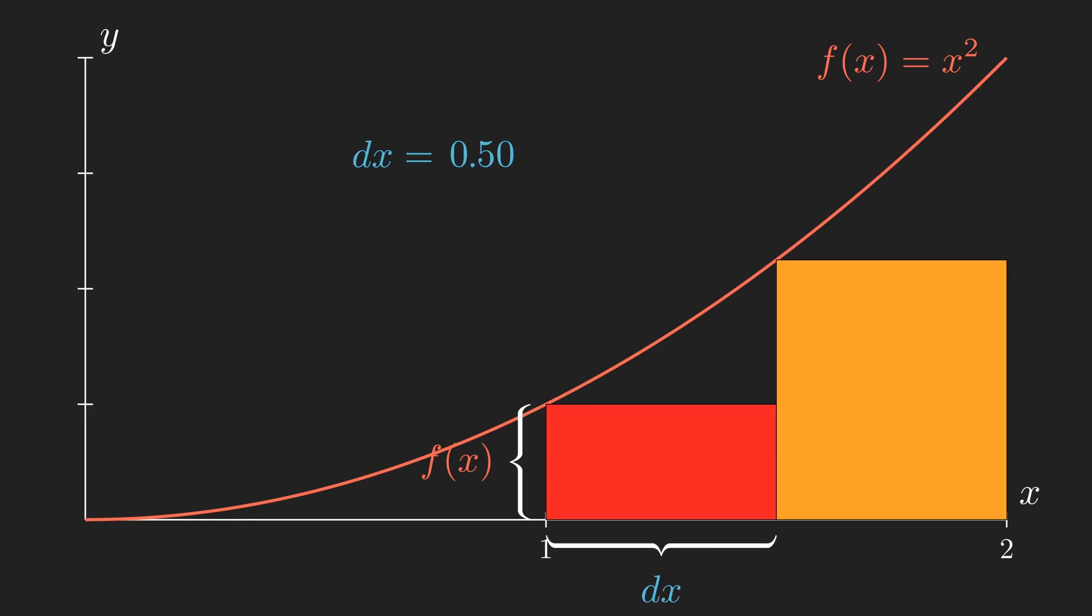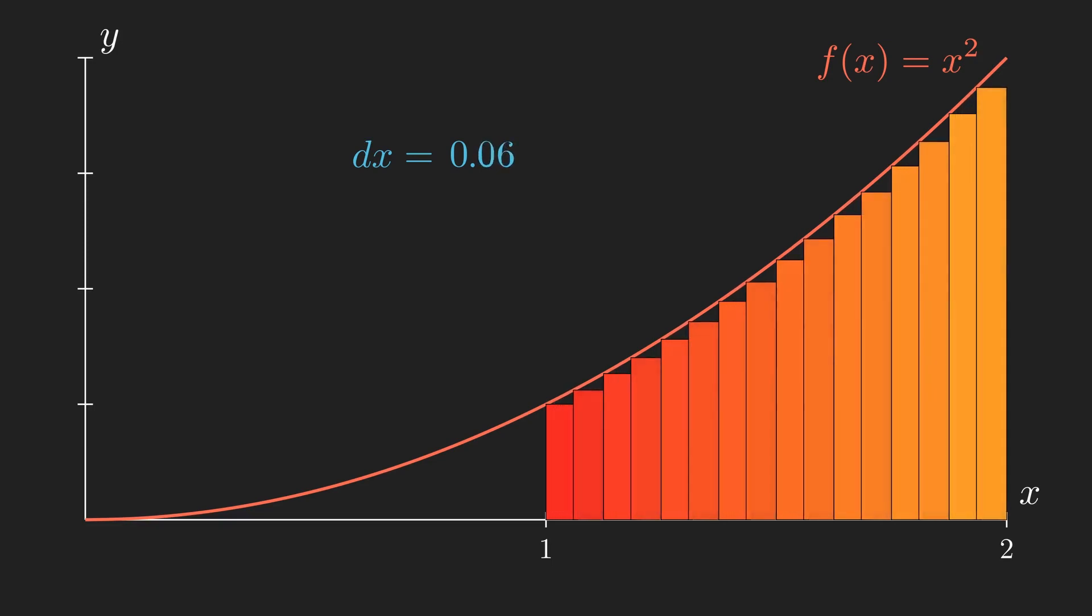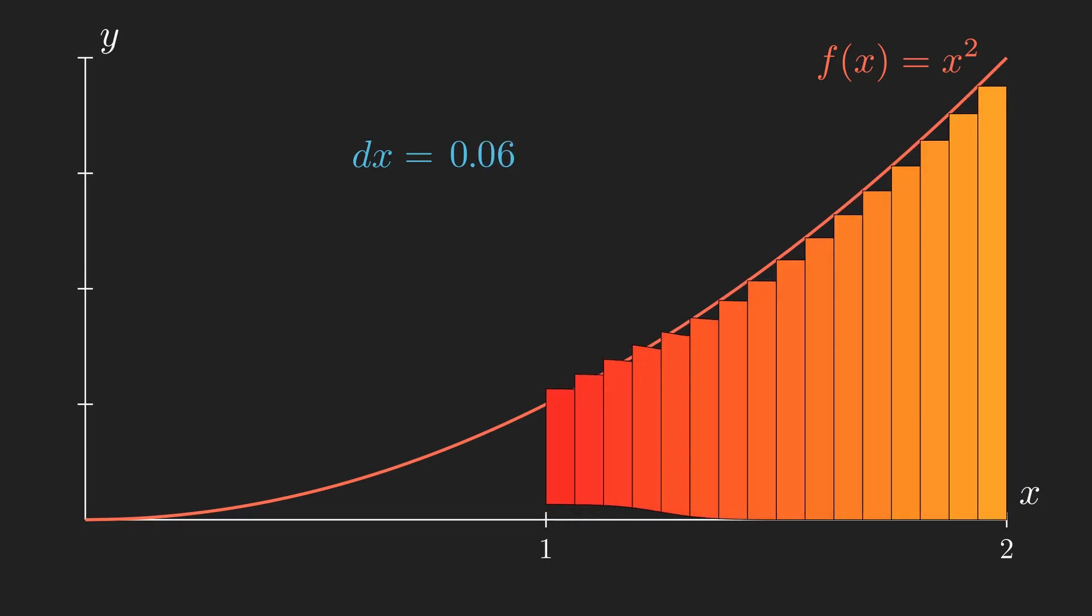As this dx value decreases, we can see the approximation of the area improving. So the true area of this shape is equal to the sum of the area of all these rectangles as dx approaches 0. Because of this, we don't talk about it as a regular sum, it's more what these sums approach, which we refer to as the integral, using an s-shaped bar.